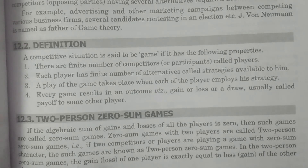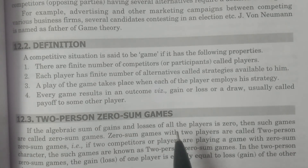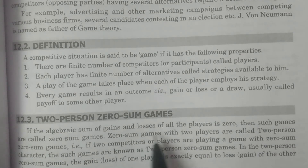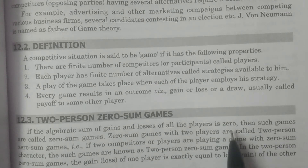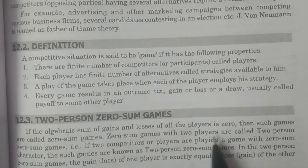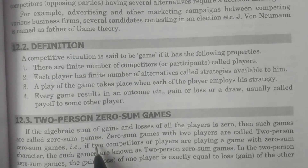Based on that, the two-person zero-sum game definition is defined as follows: if the algebraic sum of gains and losses of the players is zero — obviously the gain of player A plus the loss of player B will equal zero — then such games are called zero-sum games.